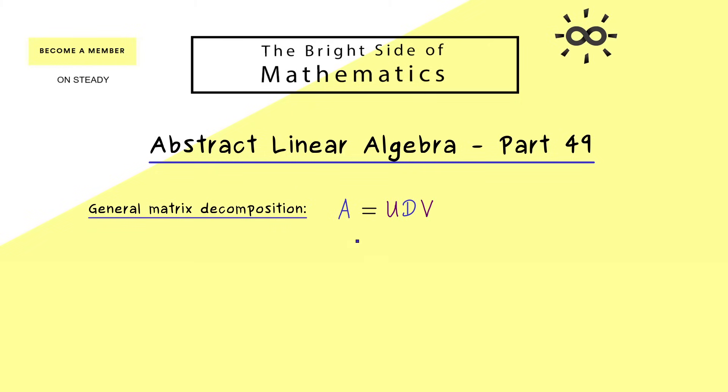In fact, in the case that the diagonalization of A works, we have a diagonal matrix and U and V are inverses of each other. And moreover, the generalization of that would be the so-called Jordan normal form decomposition. Again, in this case U and V are completely connected because the one matrix is the inverse of the other.